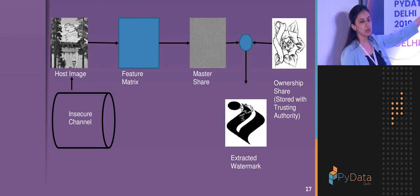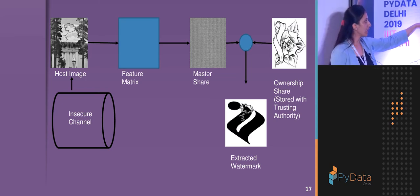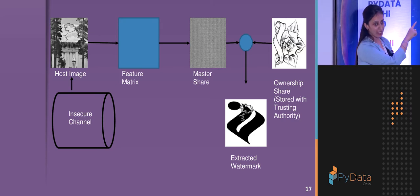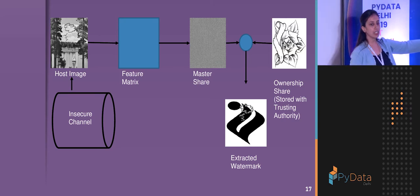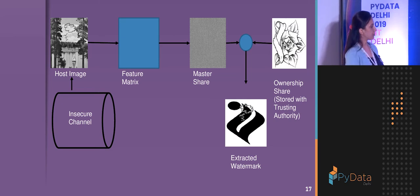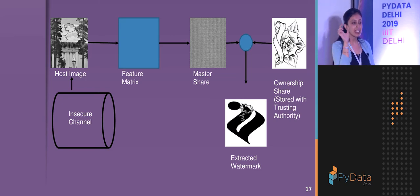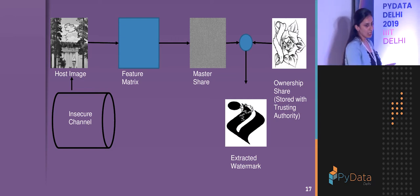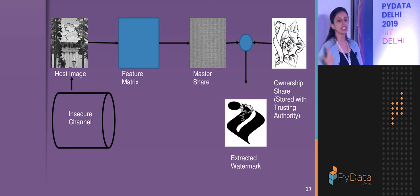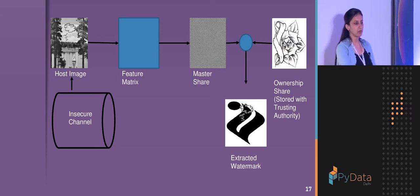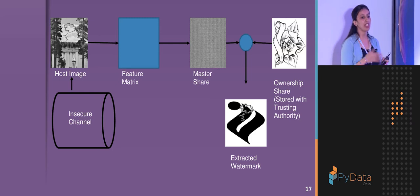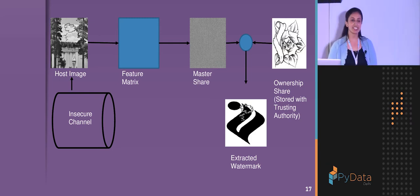In one example, I took a simple scenery image, modified it by adding a cloud and three birds. When I extracted the watermark, the boundary of the cloud and birds was shown in the watermark, indicating that this particular area was tampered. In this technique, I did not modify the actual image — I just created a secret share and gave it to the owner. Whenever the image is received, we apply the same algorithm, get the master share, overlap them, and determine whether the image was tampered.